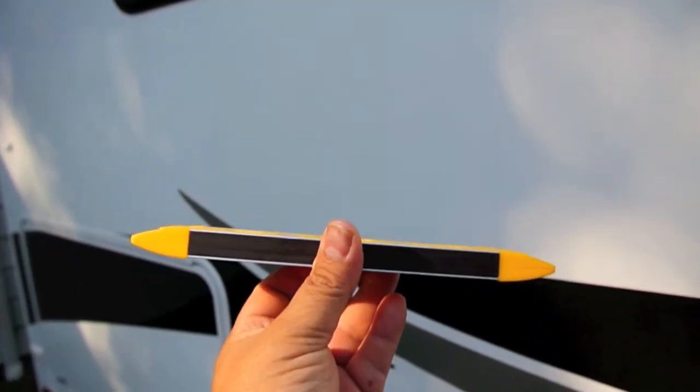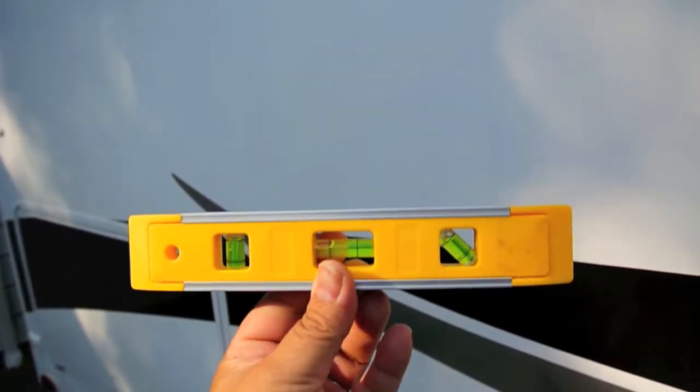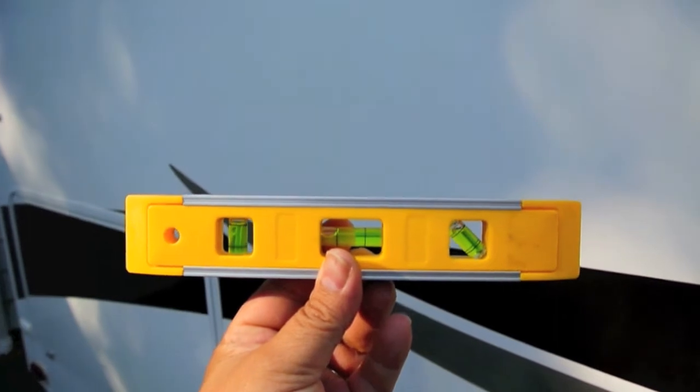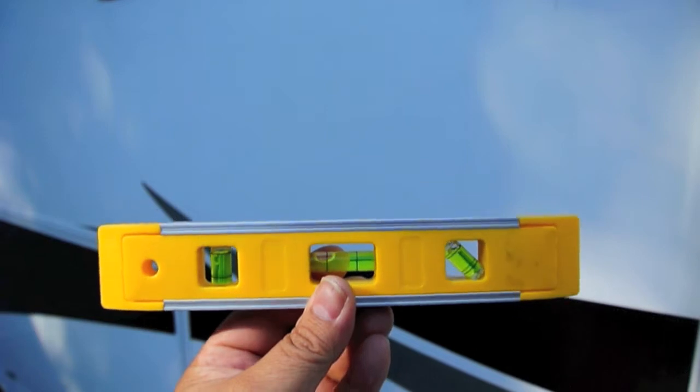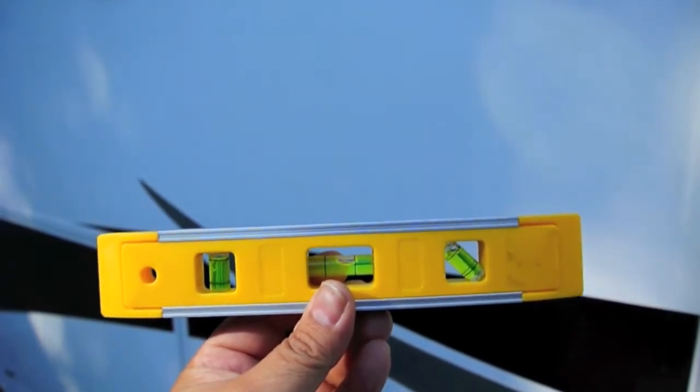If you have an RV you should have one of these torpedo levels. They're inexpensive, only a couple bucks, and they can help determine whether or not your RV is level in order to determine whether or not you can run your refrigerator.